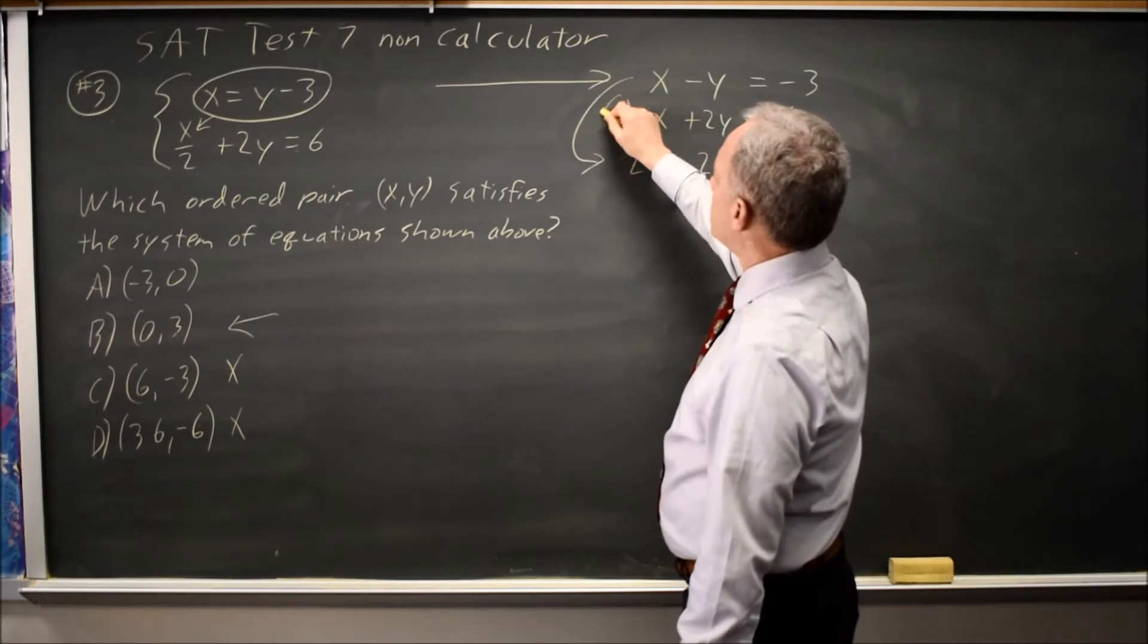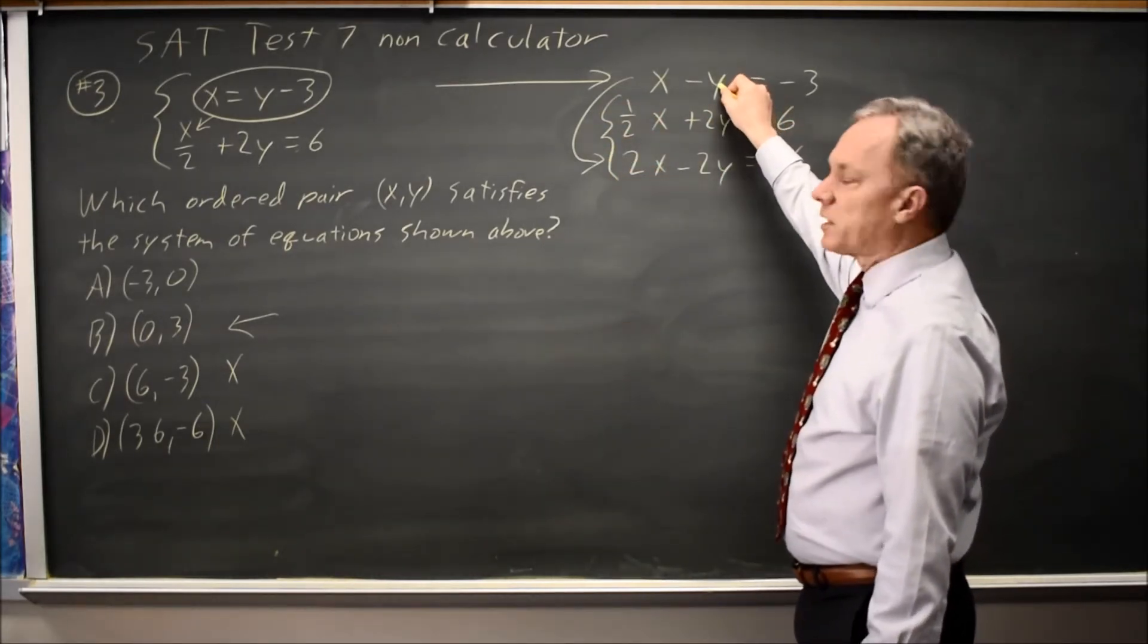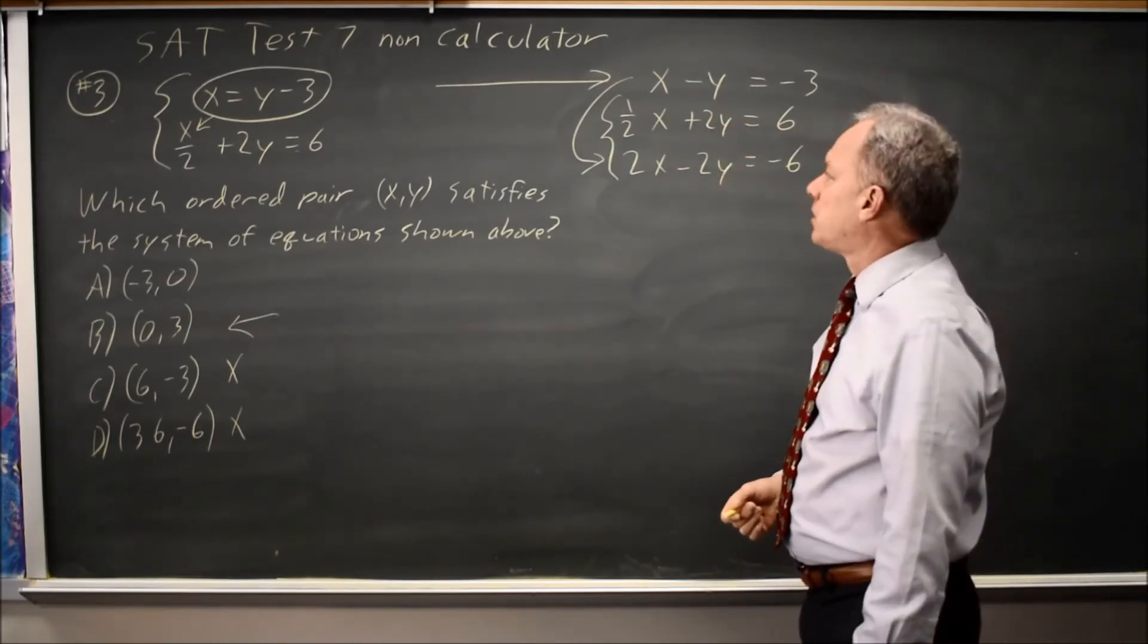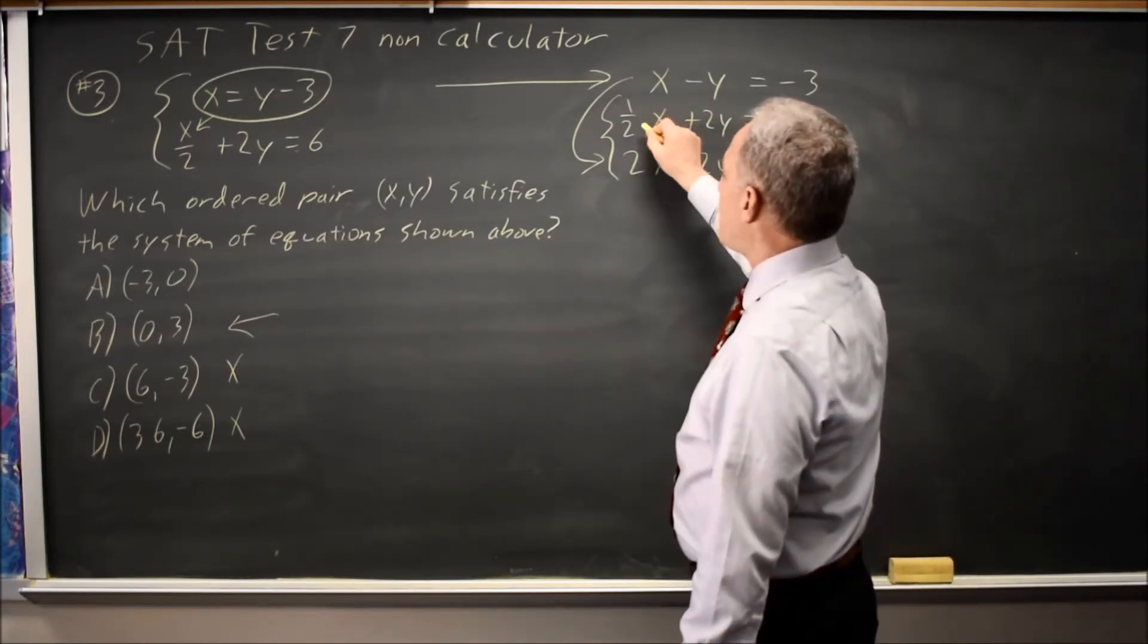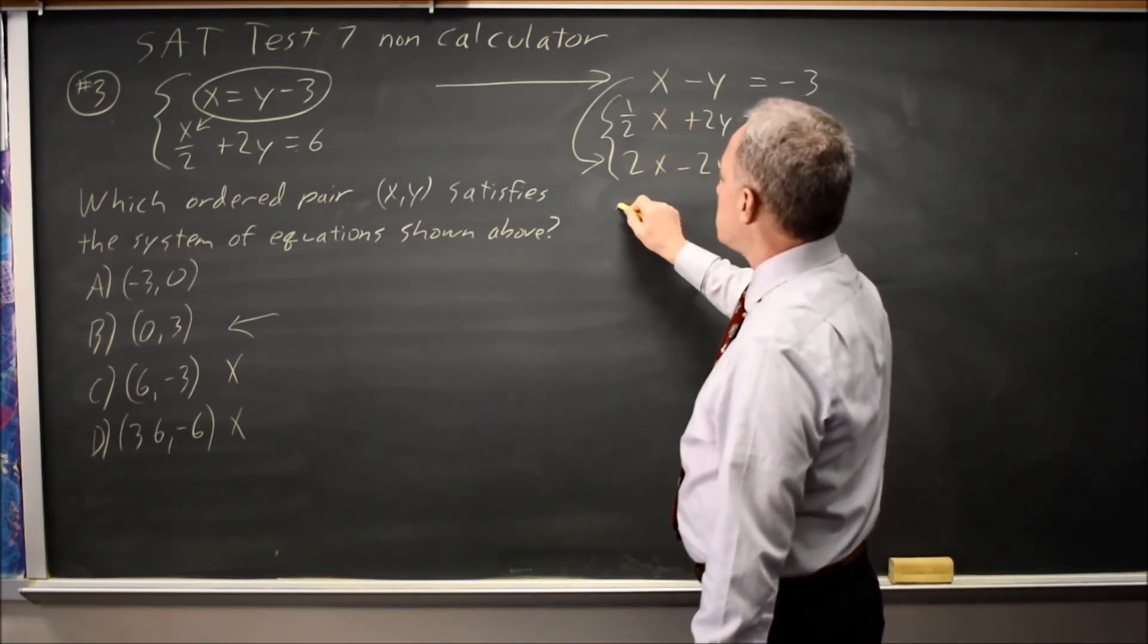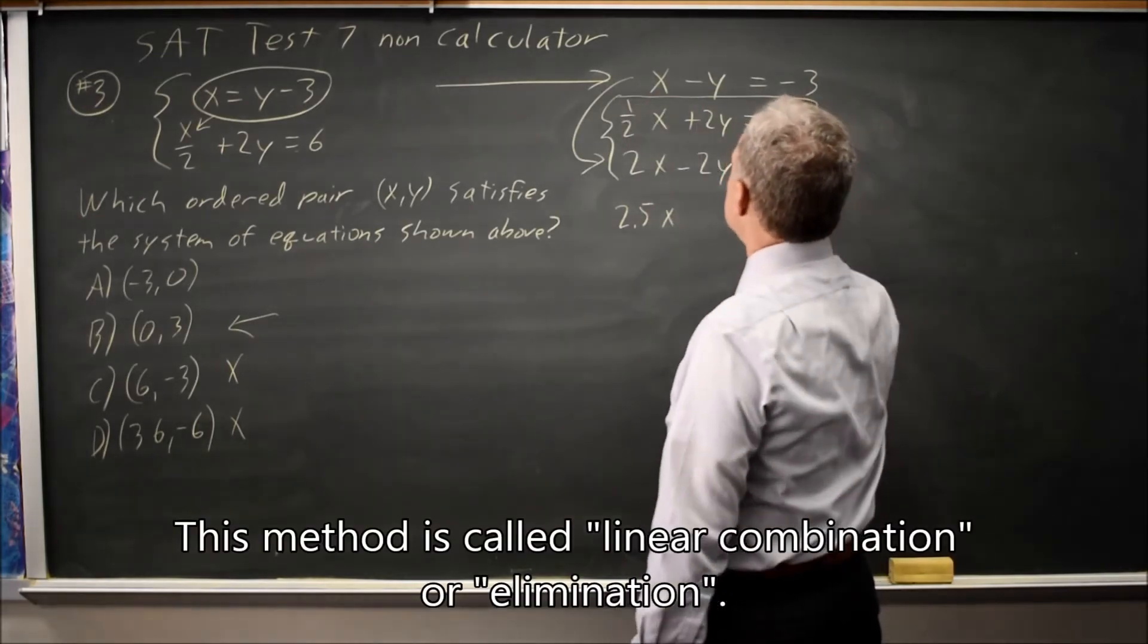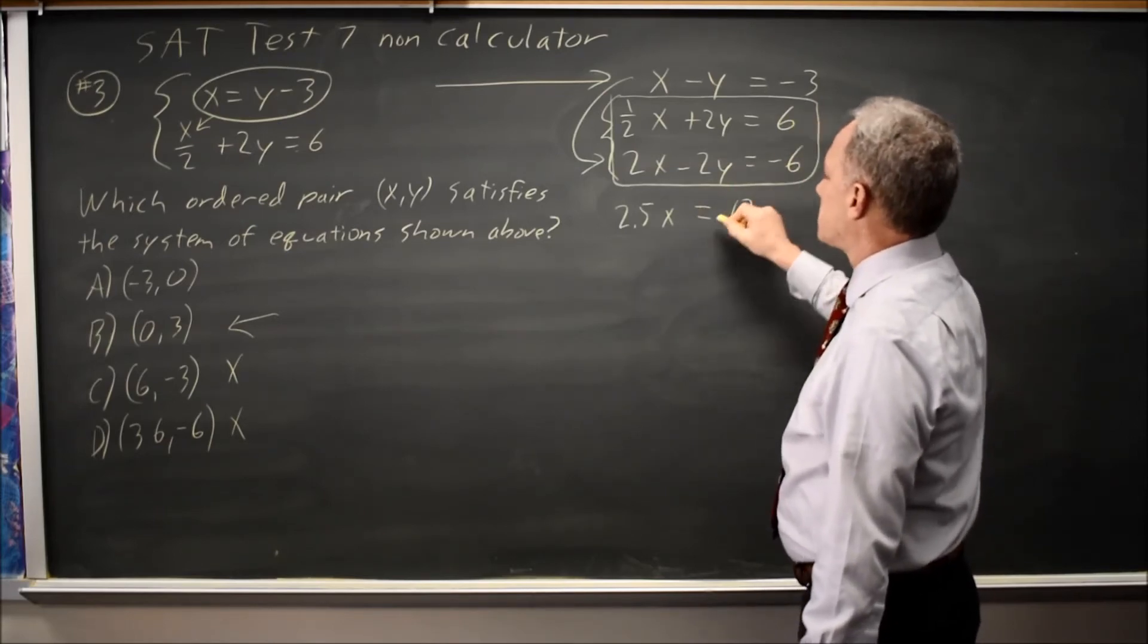And the reason I multiplied by 2 is that turns the negative y into negative 2y. If I combine that with positive 2y, I get 0y and I only have x. I only have one variable. So one-half, which is 0.5, plus 2 is 2.5x, because I'm adding these two equations here. Plus 0y equals 6 minus 6 is 0.